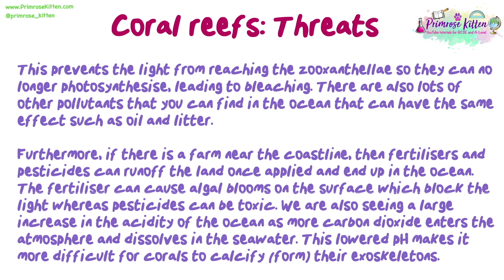Furthermore, if there is a farm near the coastline, fertilisers and pesticides can run off the land once applied and end up in the ocean. The fertiliser can cause algal blooms on the surface, which block the light, whereas pesticides can be toxic. We are also seeing a large increase in the acidity of the ocean as more carbon dioxide enters the atmosphere and dissolves in the seawater. This lowered pH makes it more difficult for corals to calcify their exoskeletons.